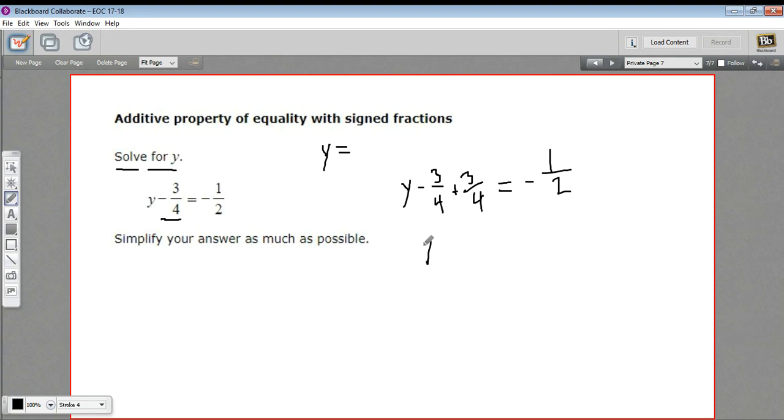So this becomes y plus 0 equals negative 1. Wait a second, I have to do the plus 3 fourths to both sides. So this has to be plus 3 fourths over here, and this will be plus 3 fourths down here. So this is y plus 0 equals negative 1 half plus 3 fourths. And I don't even need to write that y plus 0. y plus 0 is just y. So this is y equals negative 1 half plus 3 fourths.